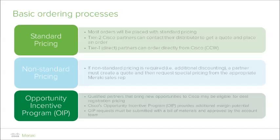As you initiate the ordering process through deal registration, you'll have to first familiarize yourself with the different tiers of pricing and the prerequisites or approvals needed to attain a certain pricing level. Standard pricing is the most common level, as most orders are placed using it. All tier 2 Cisco partners can contact a local or preferred distributor to get a quote and place an order using that price, while tier 1 partners can order direct from Cisco via CCW. Should additional discounting be needed, the deal becomes non-standard pricing, requiring a partner to create a quote and request special pricing from the appropriate Meraki sales representative, and only after review and approval will the non-standard pricing deal be released and processed.